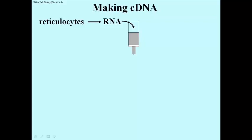If we isolate total RNA from a reticulocyte, which is of course still producing transcripts for their various proteins, we can put that RNA onto a little column containing gray stuff.